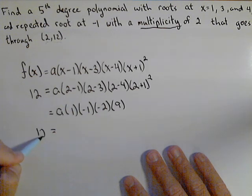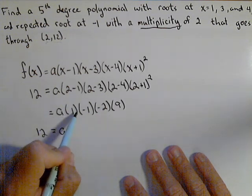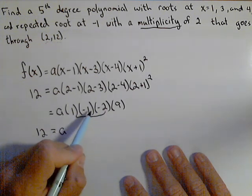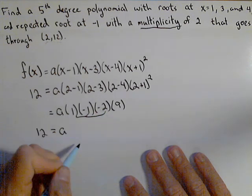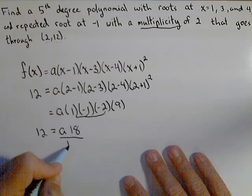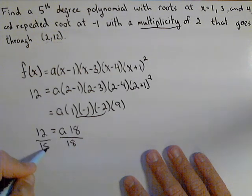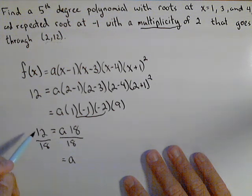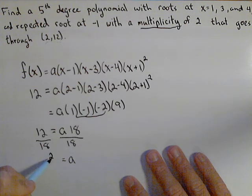So what we get is 12 equals a times, we have a negative one from those two. When we multiply the two in, we get a positive two. So 18. Divide both sides by 18. And we get a equals 12 over 18, or we could actually reduce that down to two-thirds.